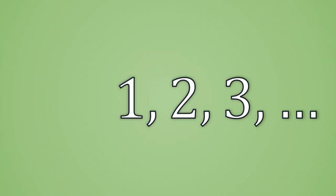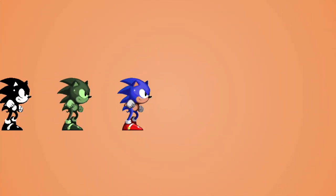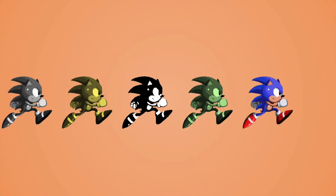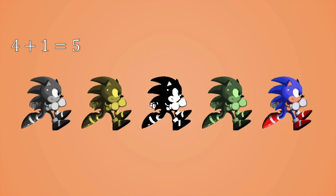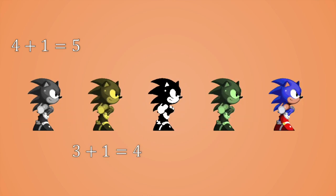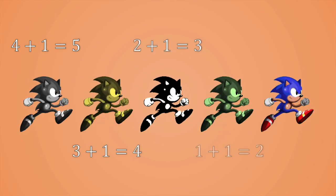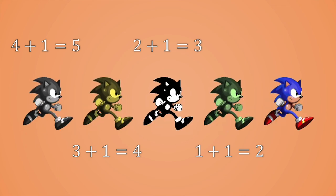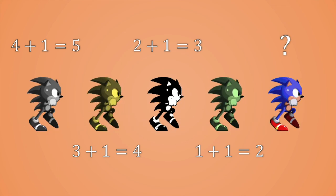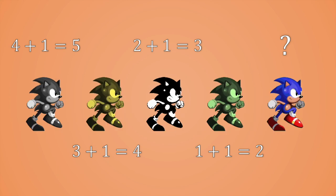But now, let's note something. When we count anything, we always have a starting point, which has nothing before. It's like we have a row of runners in a race. We know that the grey Sonic is in position 5, successor of 4. The yellow one in position 4, successor of 3, and so on till we get to the first one. 1 is the successor of who?